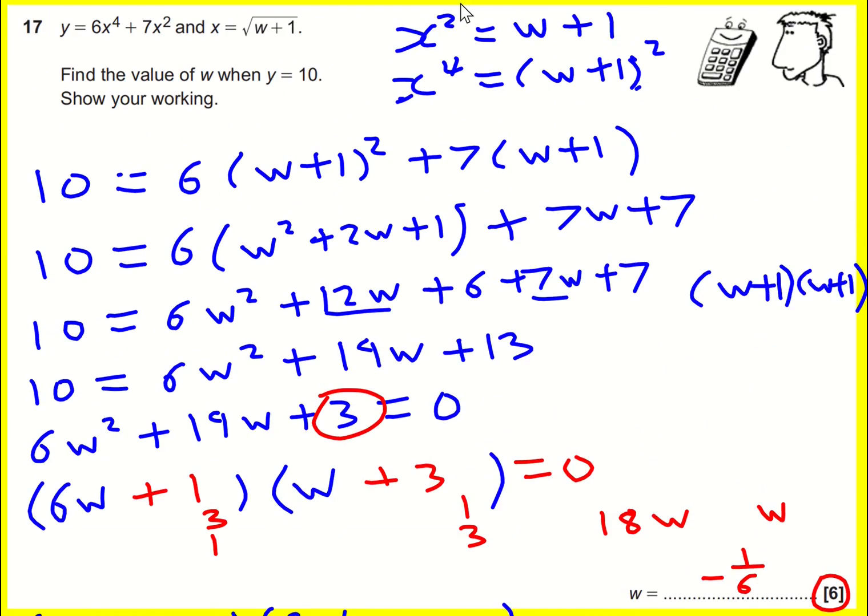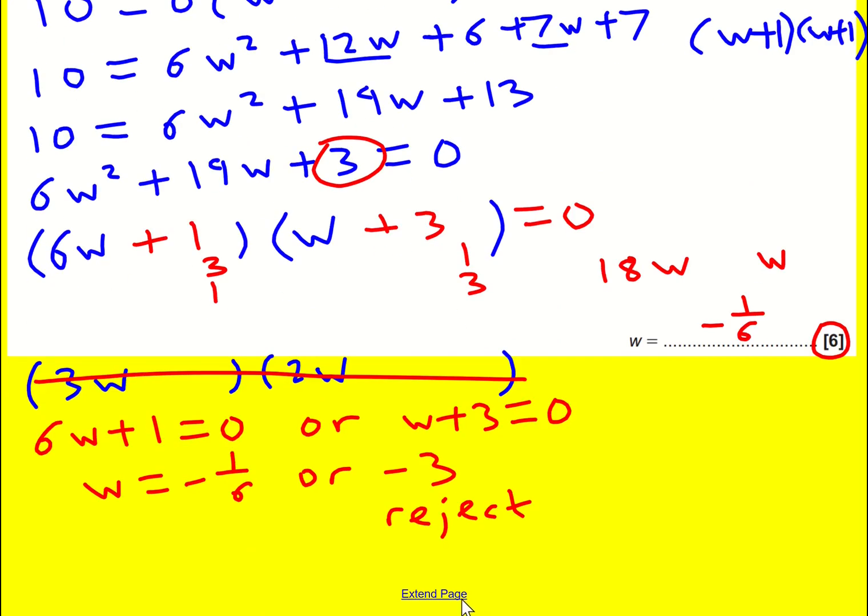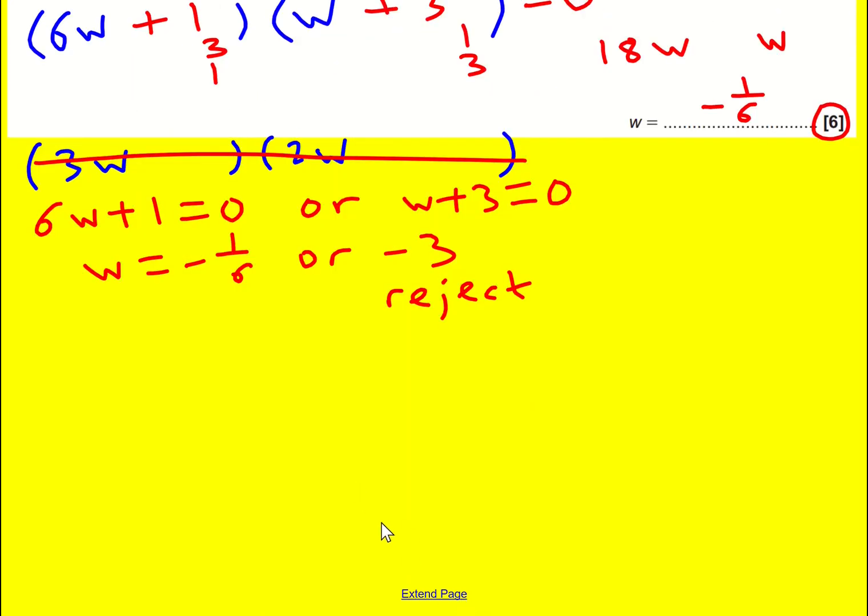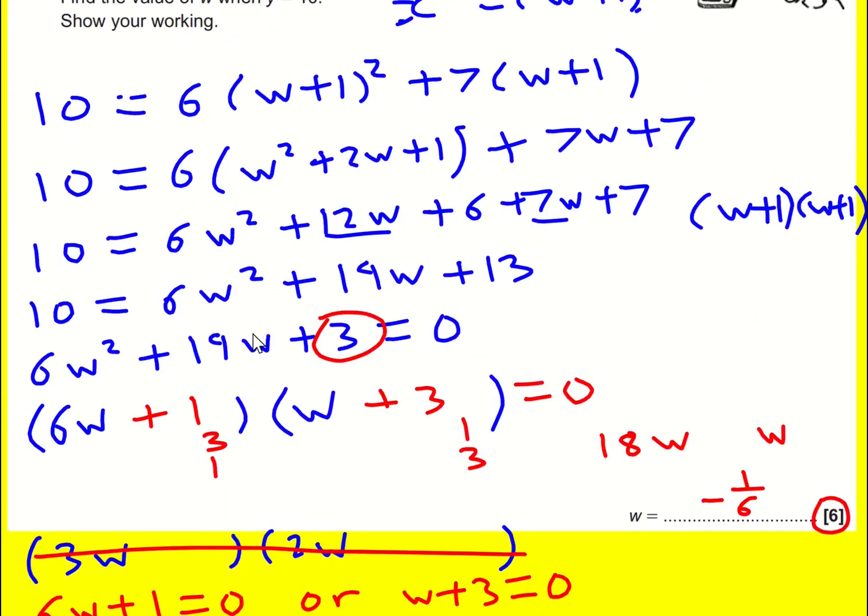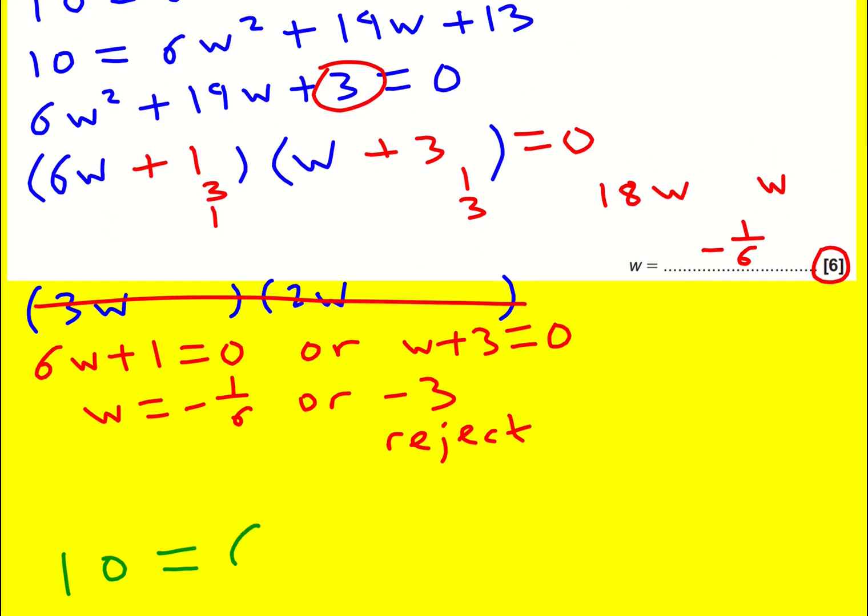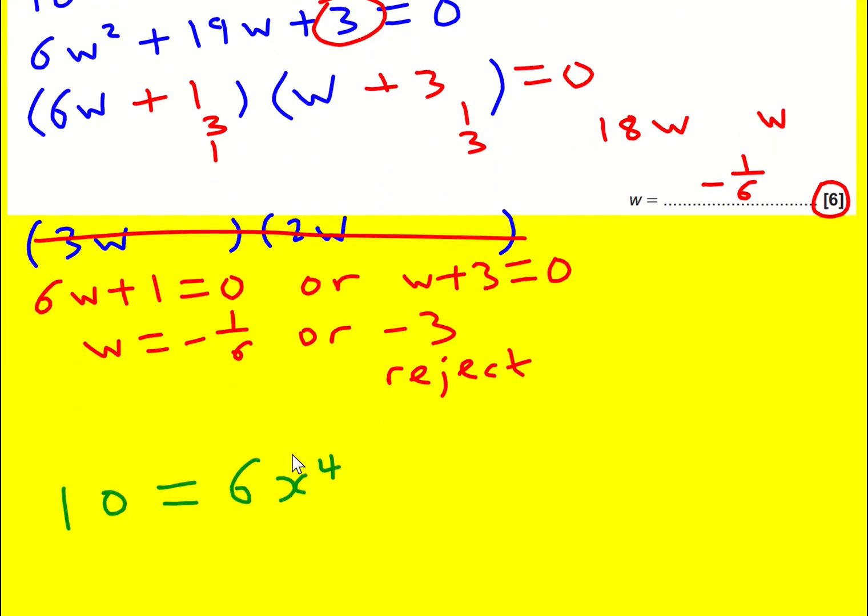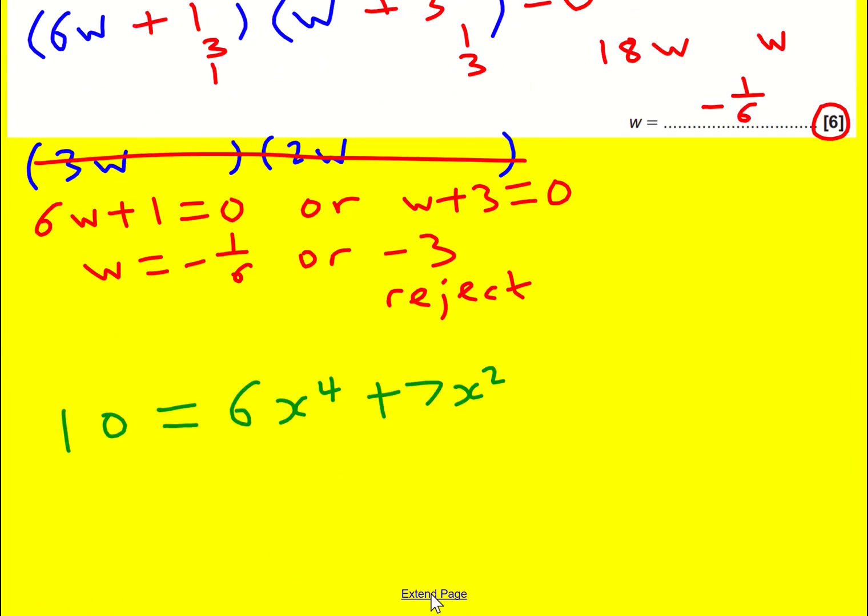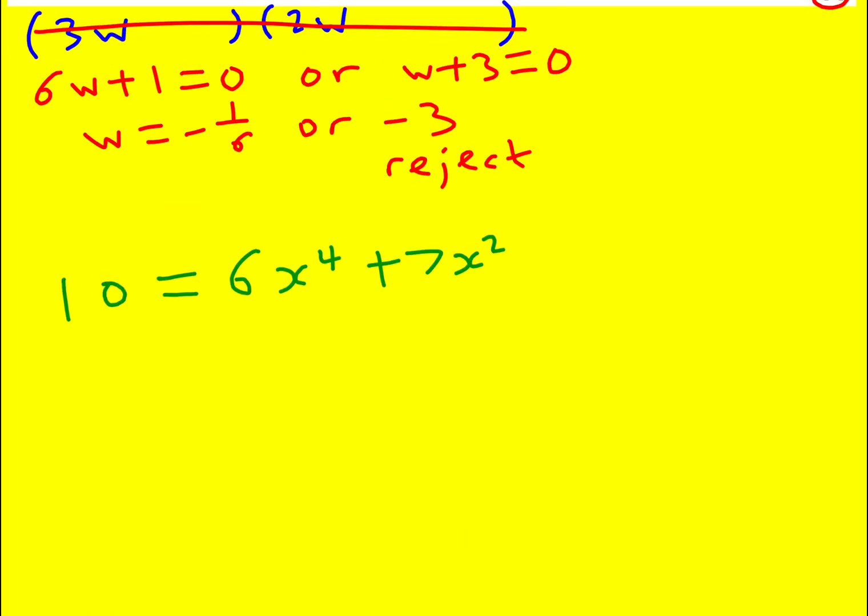All right, we're done. But I just want to say one other thing we could have done. I think it's worth chatting about. It comes into A level. And that is to simply look at solving 10 equals 6x to the 4 plus 7x squared from the start. I'm not sure I want to do that here, but I could. This is actually a hidden quadratic because I could write this as 6x to the 4 plus 7x squared minus 10 equals 0.